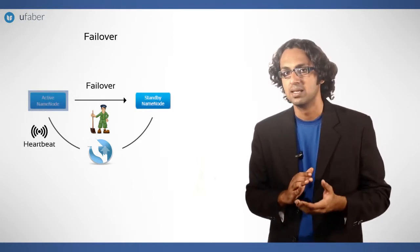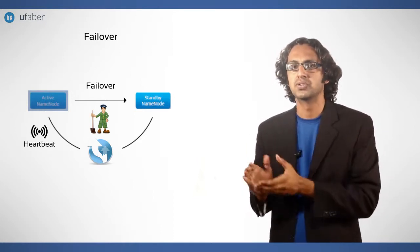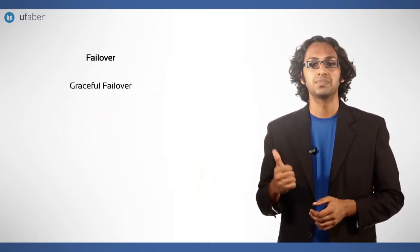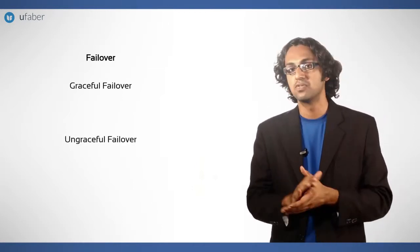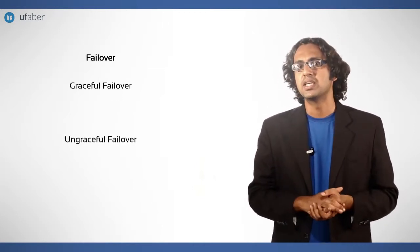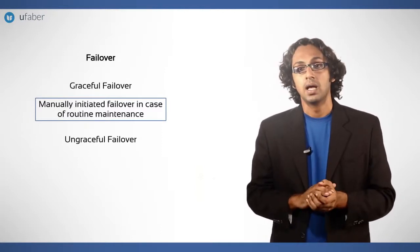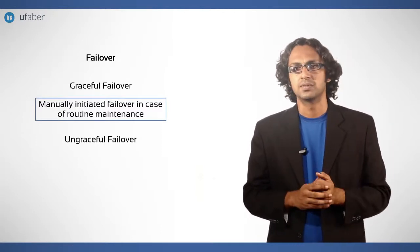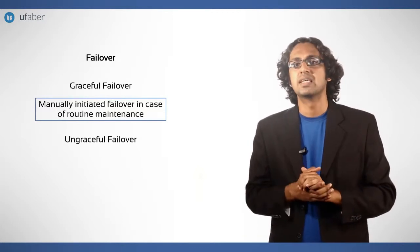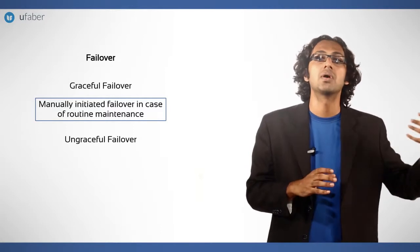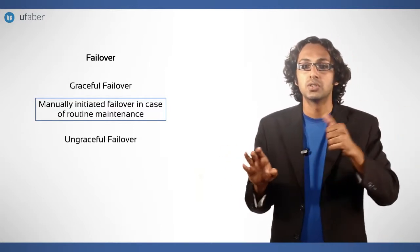The heartbeat is a signal sent by a node to failover controller indicating it is alive. There are two types of failovers: graceful failover and ungraceful failover. Graceful failover may be initiated manually by an administrator, for example, in the case of routine maintenance. This is known as a graceful failover since the failover controller arranges an orderly transition for both name nodes to switch roles.